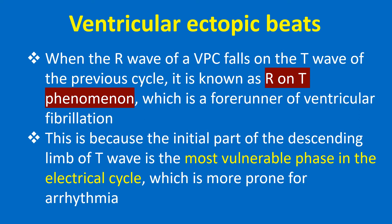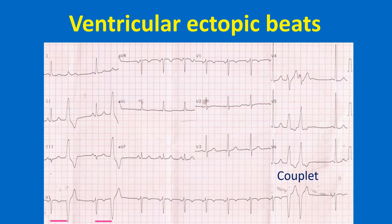This is because the initial part of the descending limb of the T wave is the most vulnerable phase in the electrical cycle, which is more prone for arrhythmia. The initial two VPCs in this ECG are isolated VPCs, while the last two occur in rapid sequence as a couplet. VPC couplets may be a forerunner of ventricular tachycardia. Isolated VPCs and the couplet are followed by a compensatory pause.